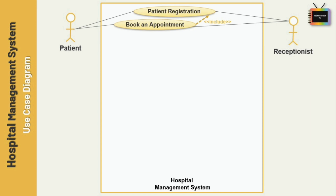We use the include relation when a use case is mandatory and part of the base use case. It is represented by a dashed arrow in the direction of the included use case with the notation 'include'. Here, 'Book Appointment' includes 'Patient Registration' — if a patient wants to book an appointment, they must first register in the hospital.